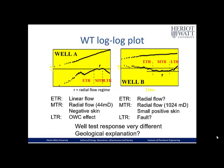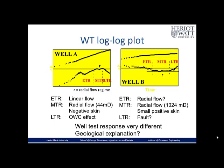Here we show the log-log plots associated with the well test data. The top lines represent the pressure buildup and below we have the derivative. The interval highlighted in red is where we take the radial flow regime, which gives us a permeability thickness. Taking into account the perforated thickness, we calculate 44 millidarcies for the well on the left-hand side and 1024 millidarcies for the well on the right-hand side. Clearly the large-scale effective permeability of these two wells is quite different, even though they are in the same reservoir.